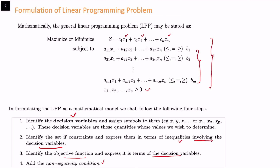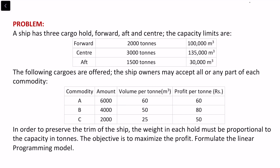Let's consider an example. A ship has three cargo holds: forward, aft, and center. The capacity limits are given — forward, center, and aft each have specific ton and volume capacities. The following cargos are offered; the ship owner may accept all or any part of each commodity. There are three commodities A, B, and C with amounts 6000, 4000, and 2000 tons. Volume per ton required is 60, 50, and 25, and profit per ton is 60, 80, and 50 rupees respectively.